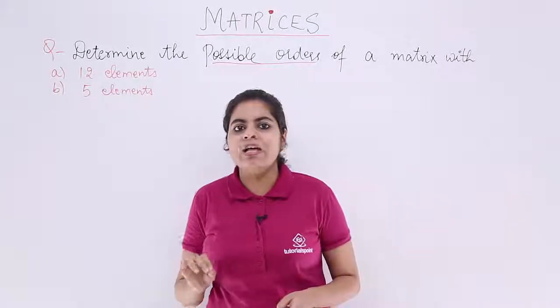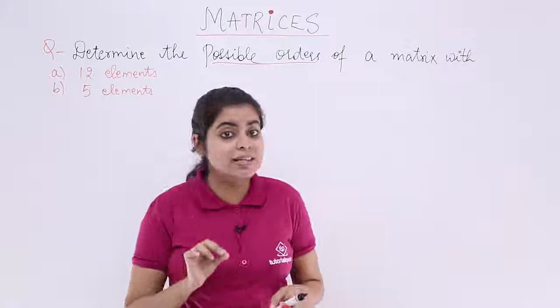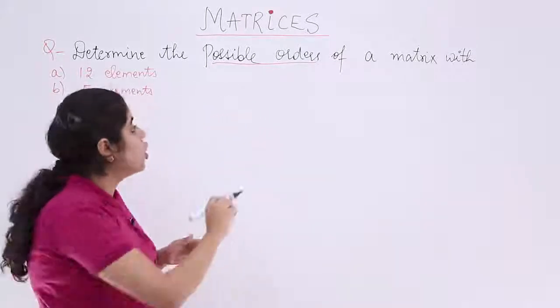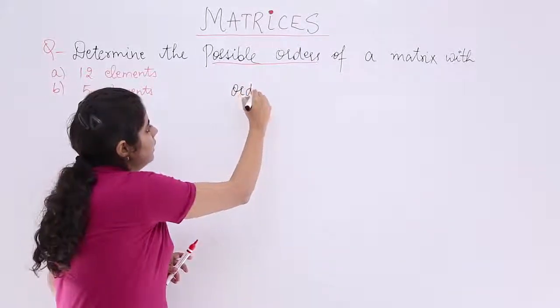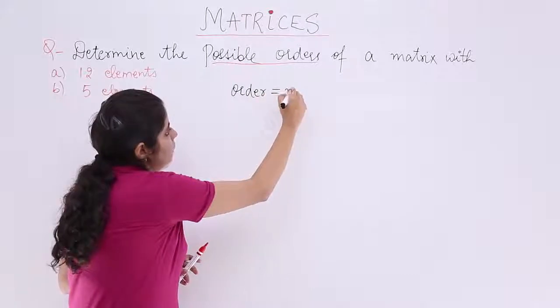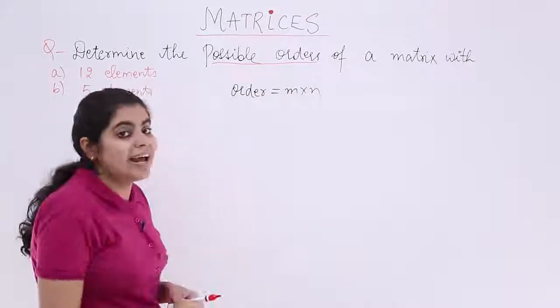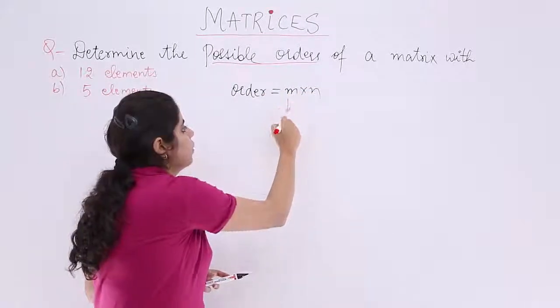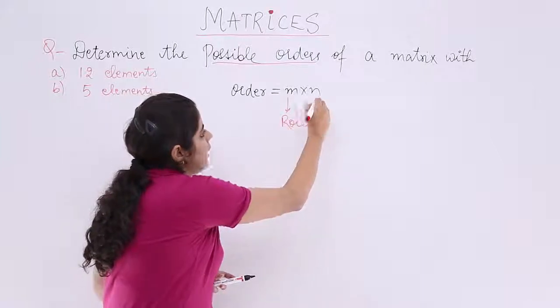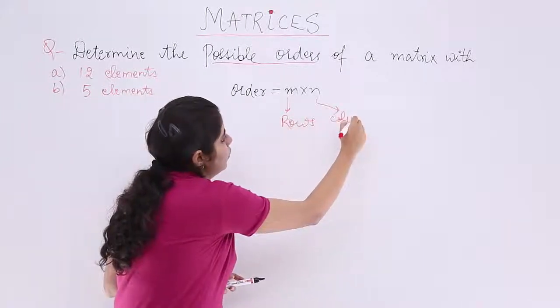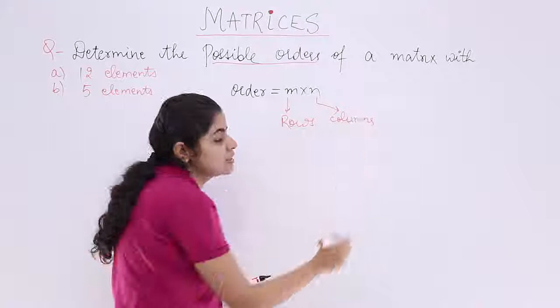That means what? I know a basic thing. I know what order is. Order is nothing but m by n, where m is the number of rows and n is the number of columns. Do I know that? Yes, I do.